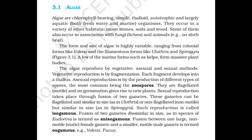Algae are chlorophyll-bearing, simple, thalloid, autotrophic and largely aquatic organisms. They occur in a variety of other habitats: moist stones, soils and wood. Some of them also occur in association with fungi like lichens and animals like on sloth bear. The form and size of algae is highly variable, ranging from colonial forms like Volvox and the filamentous forms like Ulothrix and Spirogyra. A few of the marine forms such as kelps form massive plant bodies.